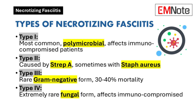Type 2 is typically caused by Group A Streptococcus, also known as Streptococcus pyogenes, sometimes in conjunction with Staphylococcus aureus. While classically located on the extremities, it can also affect the trunk. Type 3 is a rare, gram-negative monomicrobial form, often caused by Vibrio species, and carries a very high mortality rate of 30 to 40%. Type 4 is an extremely rare fungal form, primarily caused by Candida species, and usually affects individuals with compromised immunity, often after trauma or burns.